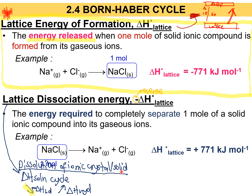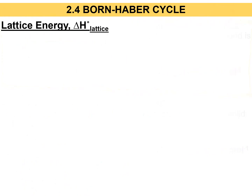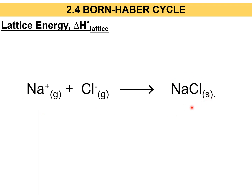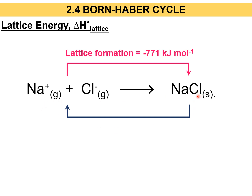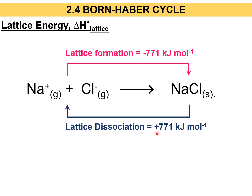In the dissolution of ionic crystals cycle, we use the lattice dissociation energy. Looking at the relationship: starting from gaseous ions and forming one mol of ionic crystal solid is the lattice energy of formation, and it must be negative because energy is released. Whereas going from NaCl and dissociating into gaseous ions is lattice dissociation.